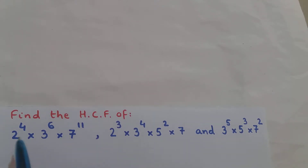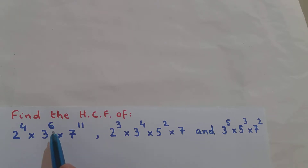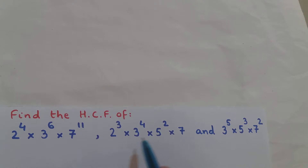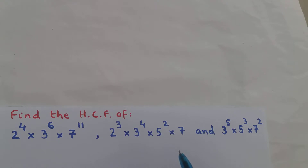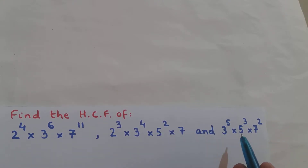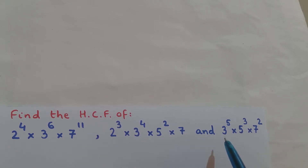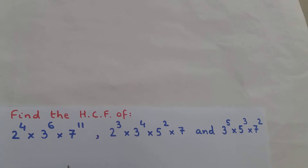In each of these expressions, everything is getting multiplied to each other. In the first expression, 2⁴ is multiplied to 3⁶, which is multiplied to 7¹¹. In the second, 2³ is multiplied to 3⁴, which is multiplied to 5² and 7. In the third, 3⁵ is multiplied to 5³, which is multiplied to 7².